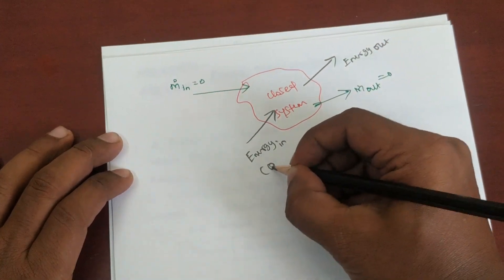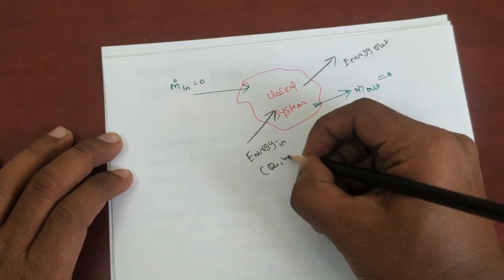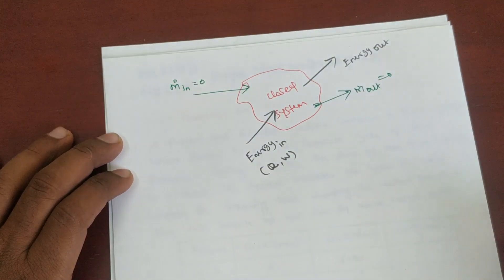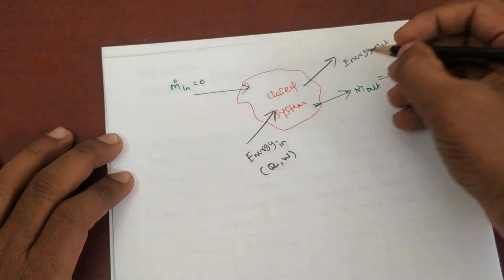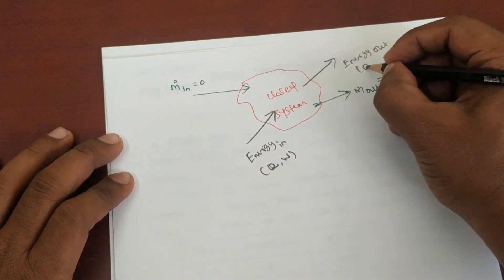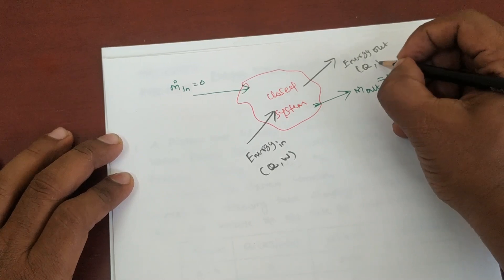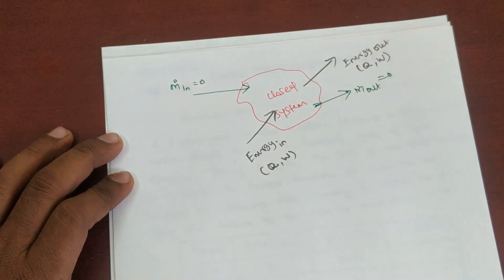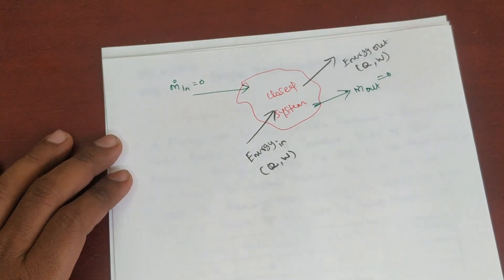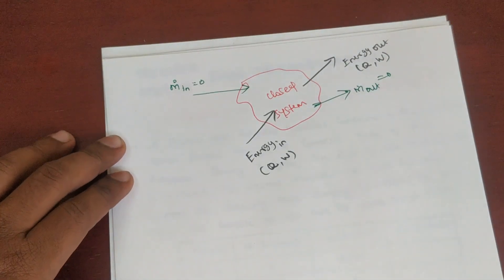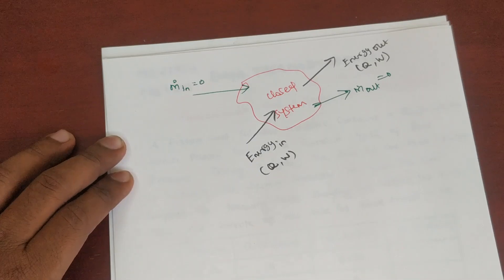So energy interactions: Q is heat, W is work. Energy in and energy out are in the form of heat Q and work W. These are the two types of energy interactions in a closed system.